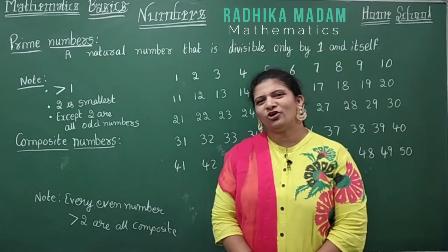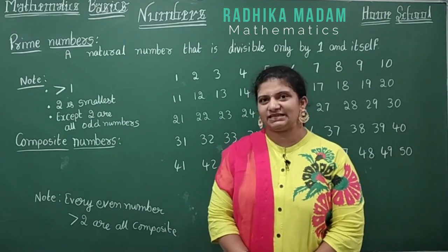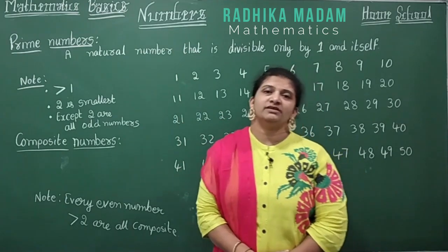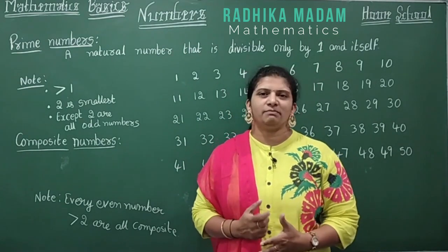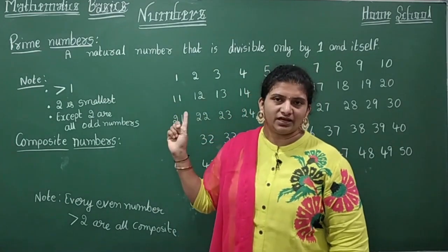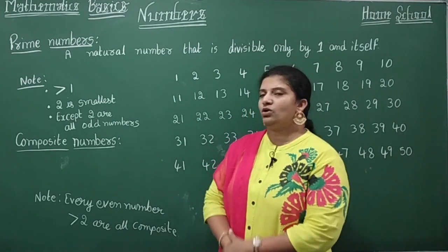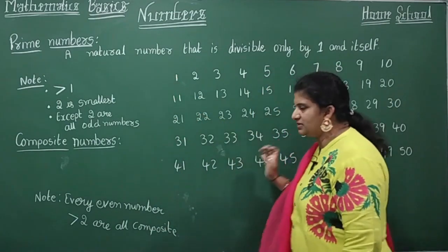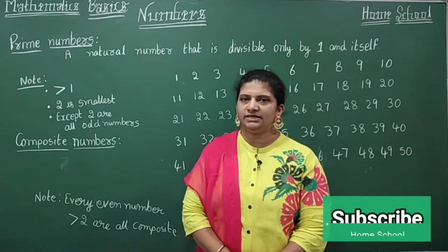Hi children, welcome to your home school. In this session we are going to see another topic of mathematics basics. Numbers — 1, 2, 3, 4, 5, 6, 7, 8, 9, 10. These are the numbers we remember, right? Now we are going to classify all the numbers into prime or composite. We have written 50 numbers here, and we're going to learn how to say whether a number is prime or composite.